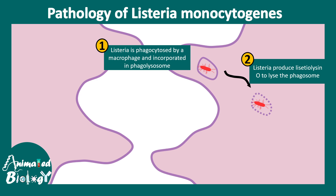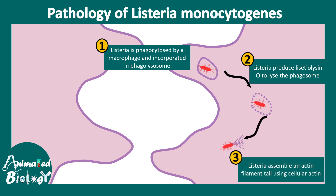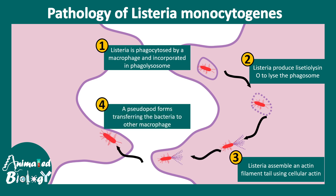The bacteria then forms a tail of actin cytoskeleton using the cellular actin cytoskeleton of the macrophage, which helps it to propel inside the macrophage and eventually evade from it. The bacteria can then infect another macrophage or circulate in the bloodstream as well.